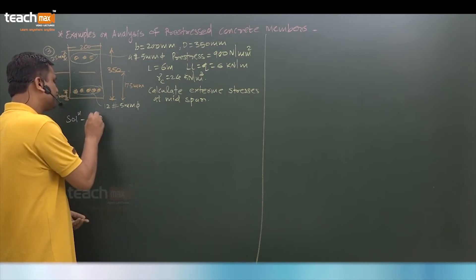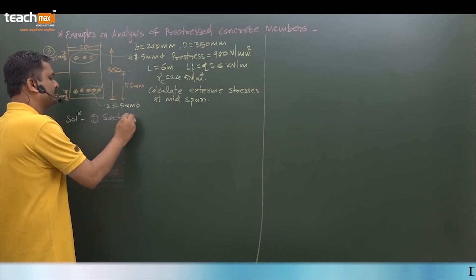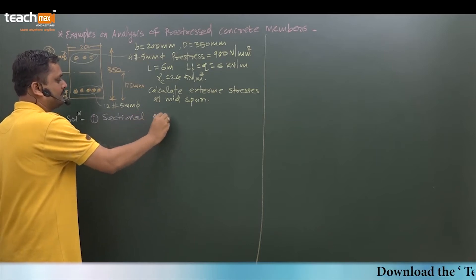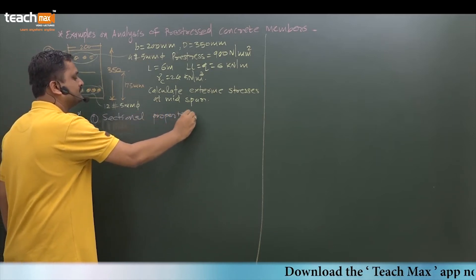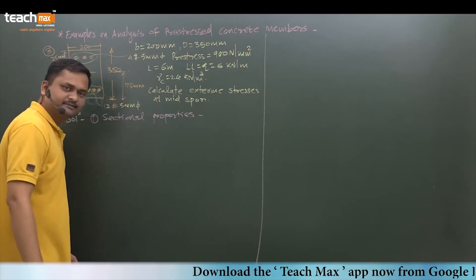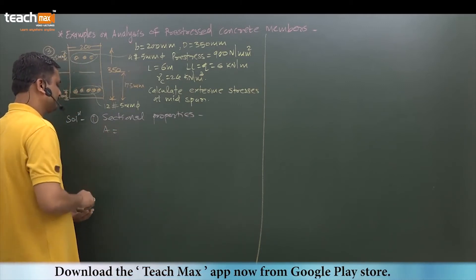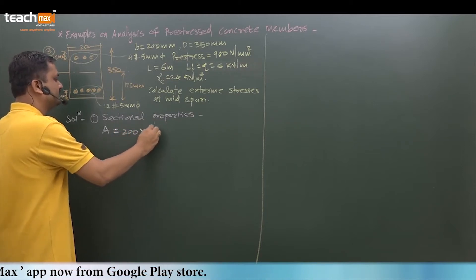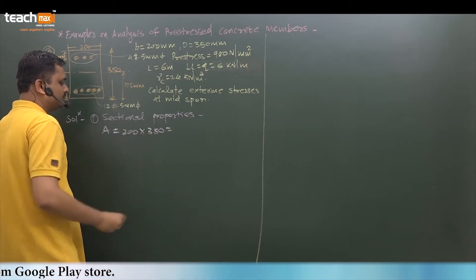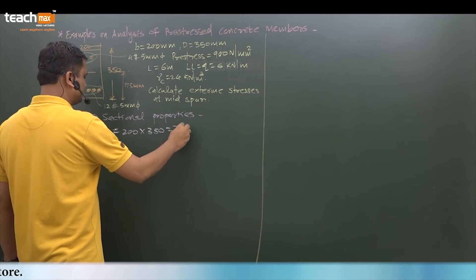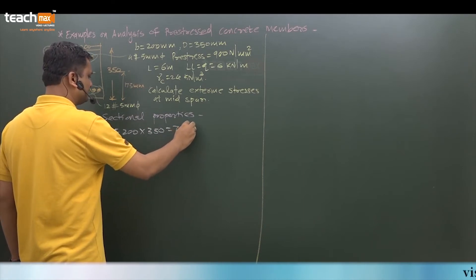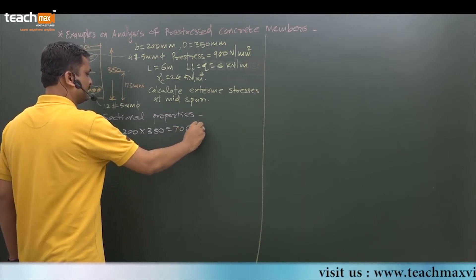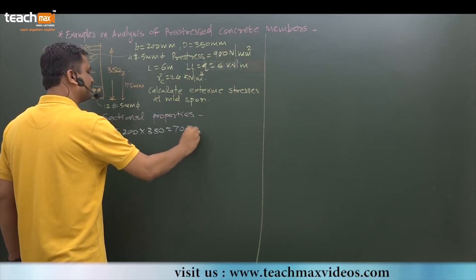First of all, we are going to find out sectional properties. Area is equal to 200 into 350, so 70 into 10 raised to 3.